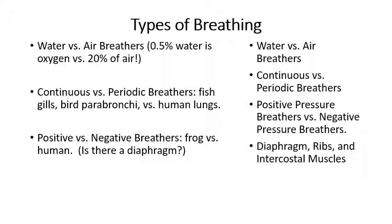Do you remember from lecture four what the mitochondria are? The mitochondria are used to convert glucose into ATP. The conversion of glucose into ATP requires oxygen as one of the reactants for that process. The conversion of glucose into ATP also generates carbon dioxide as a waste product.